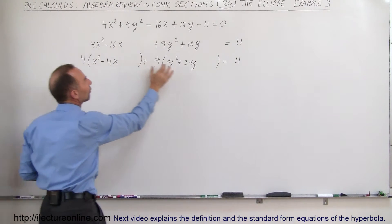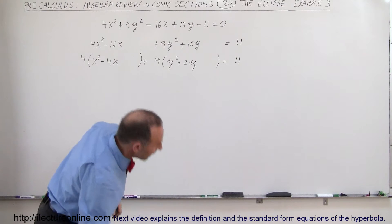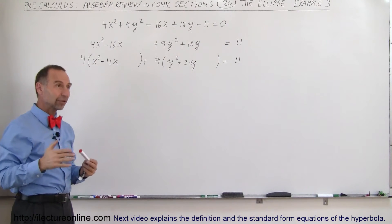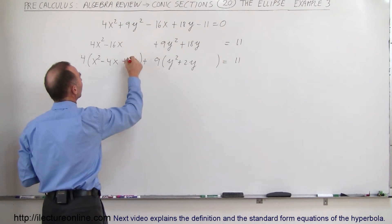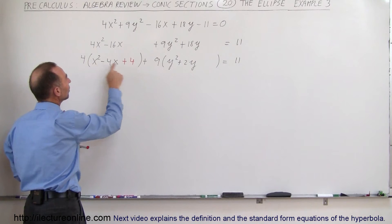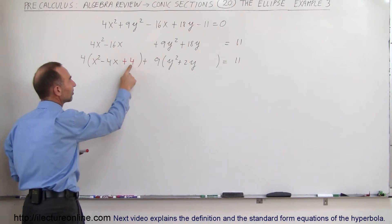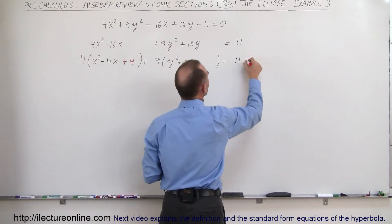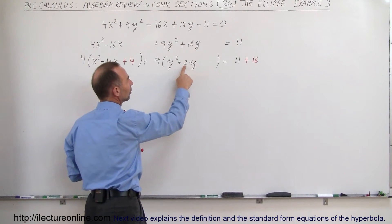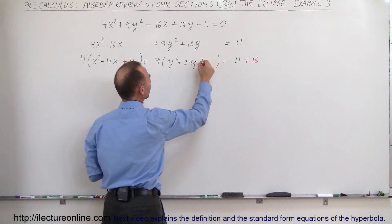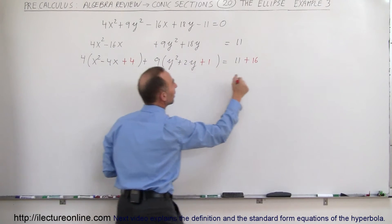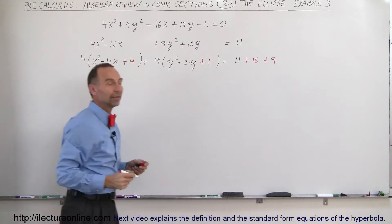Now we need to complete the square on both sides. We take the coefficient of x, which is minus 4, take half of it — that's minus 2 — and square it to get positive 4. So we add plus 4 inside the parentheses. But remember, it's inside the parentheses multiplied by 4, so 4 times 4 is 16 — we've added 16 on the left side, so we add 16 on the right side. Over on the y side, half of 2 is 1, squared gives plus 1. That's inside the parentheses multiplied by 9, so we've added 9 on the left side and must add 9 on the right side.